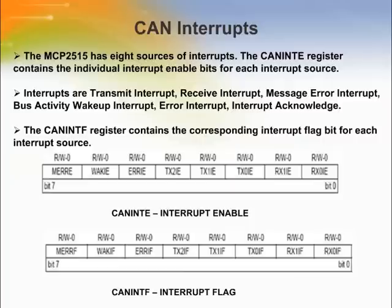The MCP2515 has eight sources of interrupts. The CAN Interrupt Enable register contains the individual interrupt-enable bits for each interrupt source. The CAN Interrupt Flag register contains the corresponding interrupt flag bit for each interrupt source. When an interrupt occurs, the interrupt pin is driven low by the MCP2515 and will remain low until the interrupt is cleared by the MCU. An interrupt cannot be cleared if its respective condition still prevails. The CAN Interrupt Flag bits are read-write, and an interrupt can be generated by the MCU setting any of these bits provided the associated CAN Interrupt Enable bit is also set.